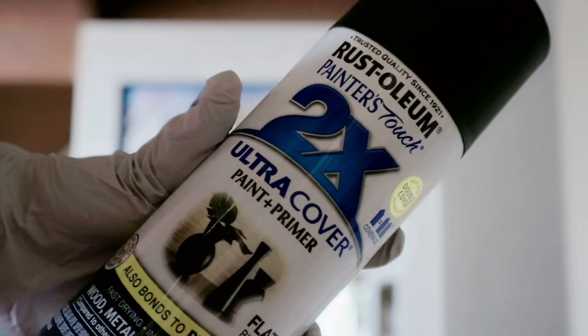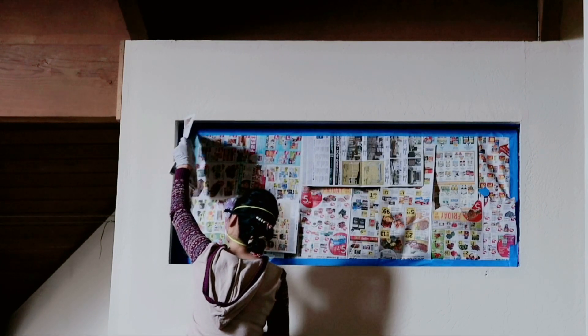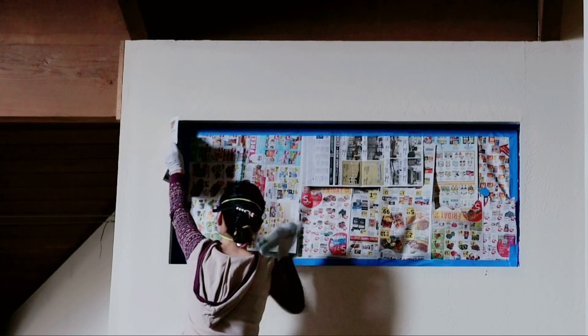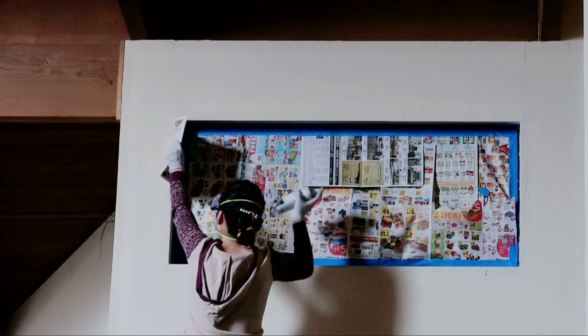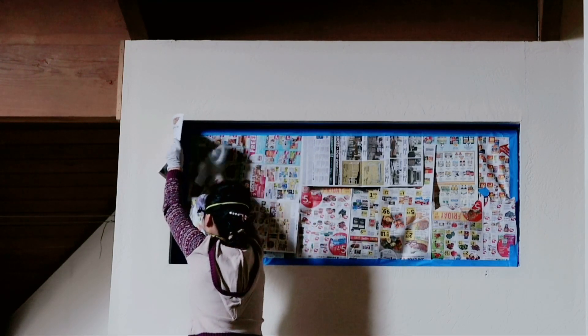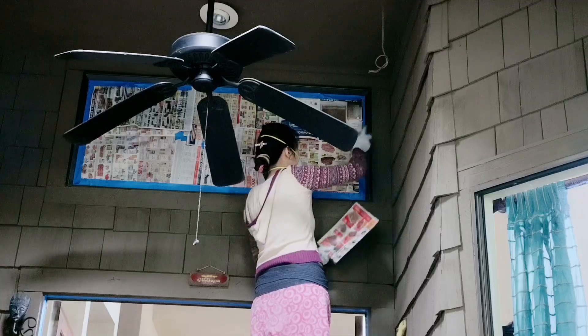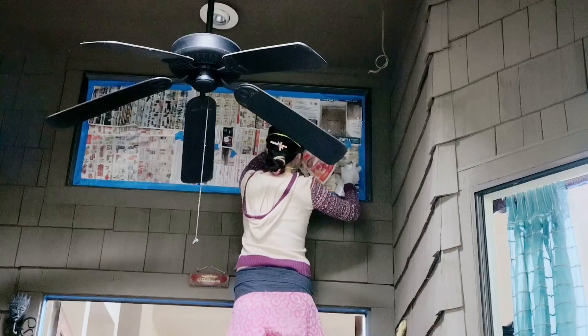I first spray painted all the metal part door frames by using Rustoleum matte black. It does have a very strong smell, so make sure to always wear a respirator to protect yourself. I usually spray paint items outside. But if you must paint it indoors, make sure to have good air ventilation.